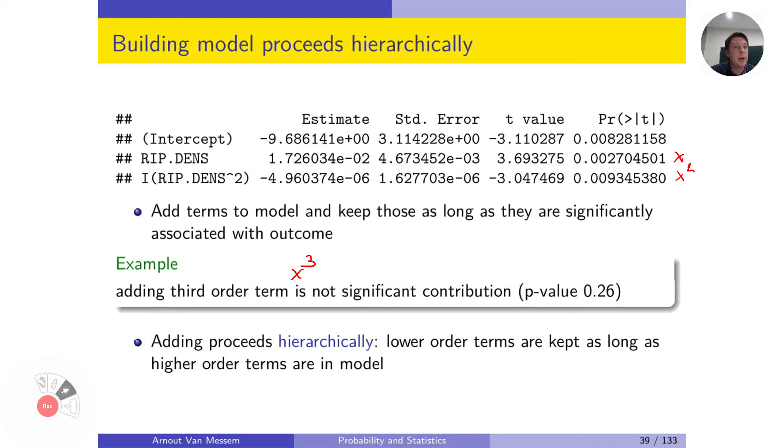However, if we do this, we get a p-value of 0.26, which is no longer significant. So it doesn't make sense to add a cubic term. It's important also to know that all of the lower order terms are kept as long as the higher order terms are in the model.